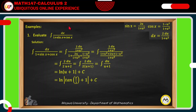Let's have the following example. Number one: evaluate the integral of dx over 1 plus sine x plus cosine x. Because the given integrand is a rational function of sine and cosine, we can make use of the substitution formulas.